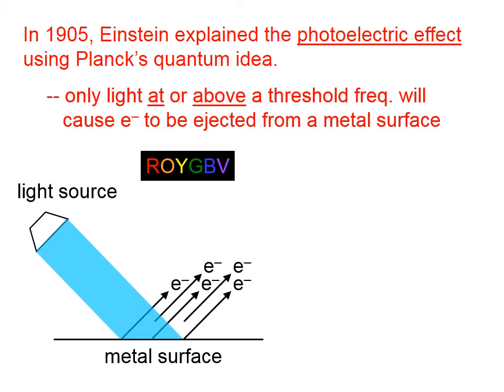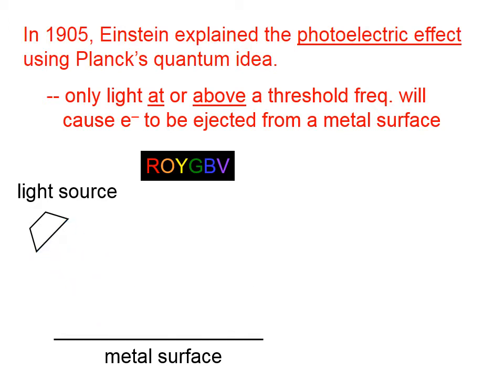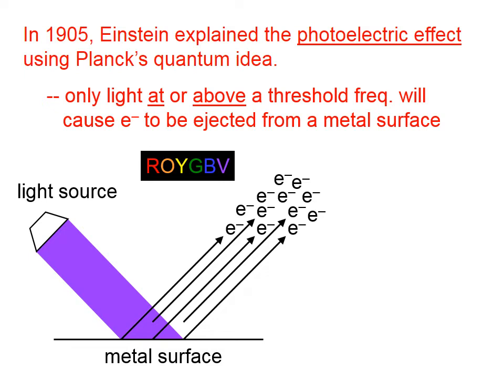How about blue? When we shine blue light — when we reach that particular frequency — we do get electrons that are ejected from the surface. What would we expect when we shine violet light on this metal surface? We should expect electrons to be ejected at that higher frequency. In other words, blue, in this case, is the threshold frequency. Anything below that, no electrons will be ejected no matter how intense the light. And if we shine blue or higher, like violet, we do get electrons ejected.